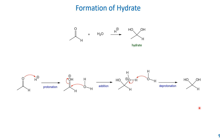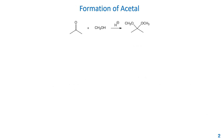Acetal has a very similar structure to hydrate — the only difference is that instead of two hydroxy groups, you now have two alkoxy groups connected to the same carbon. In this example, acetone reacts with alcohol (not water). Water is actually one of the products, and acid is the catalyst — same as in hydrate formation.